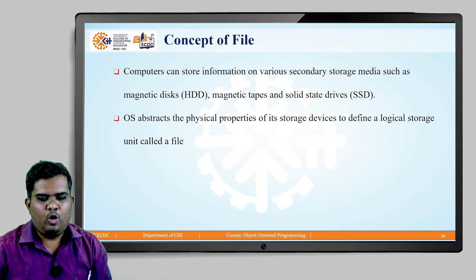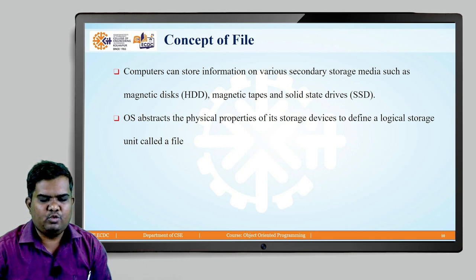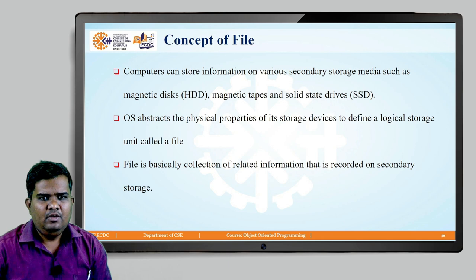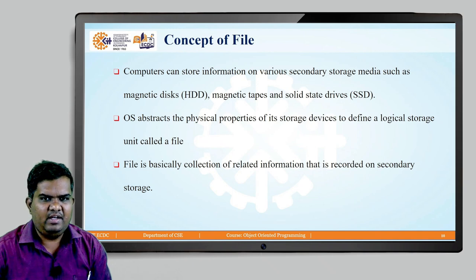Whenever the operating system has to represent the logical representation of the storage unit, it will abstract the physical representation of the hard disk drive or the solid state drive into the unit called the file. So a file is basically a logical representation of a storage unit of data — a collection of related information recorded on secondary storage media such as the hard disk or solid state drive.